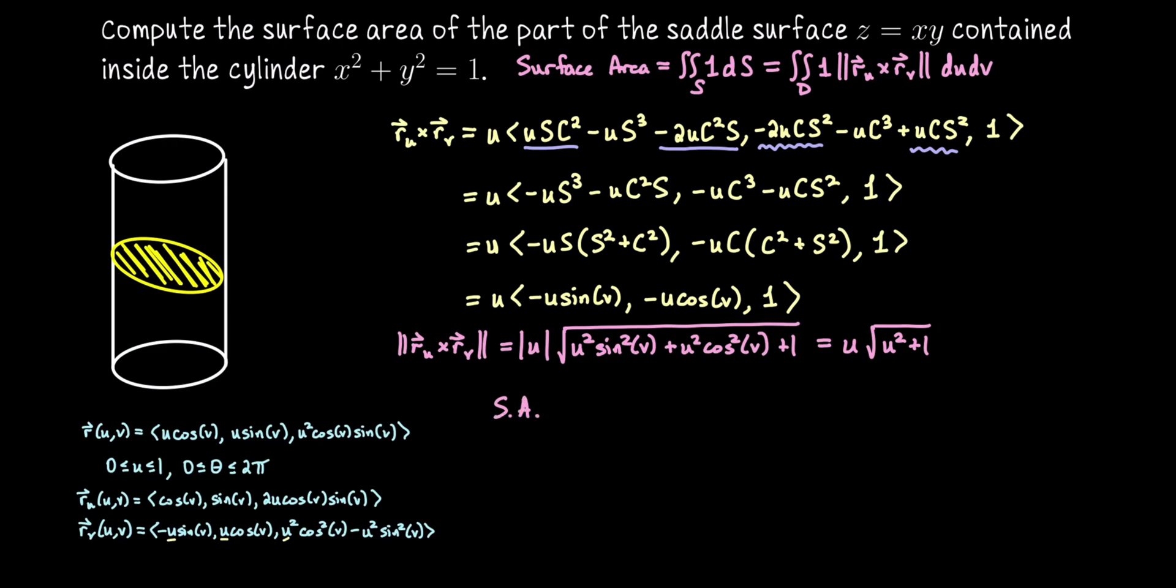All right, so our surface area computation is ready to go. This is going to be the double integral over the domain. So let me write 0 to 2 pi for the v parameter and 0 to 1 for u. 1 times this length. So u square root of u squared plus 1 du dv. I want to do a u substitution here, but I'm already using the letter u. So I'm going to use w. So we'll let what's inside the radical be w. So if w is u squared plus 1, dw is 2u du. Or in other words, what we see inside of the integrand u du will get replaced with 1 half dw.